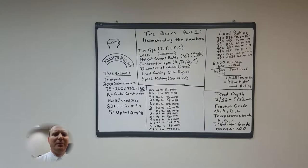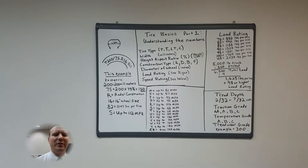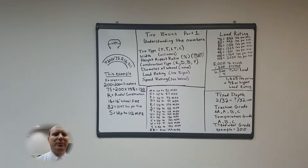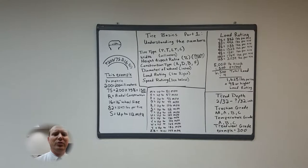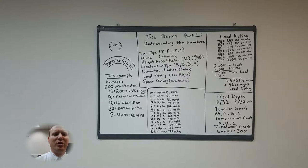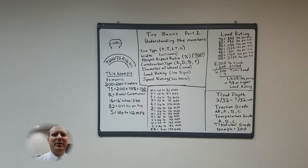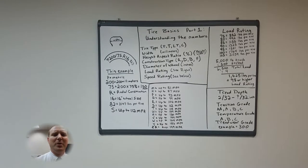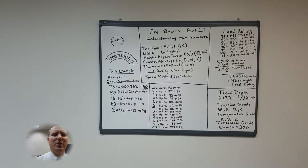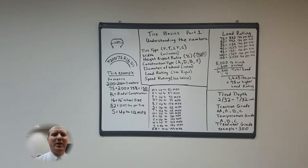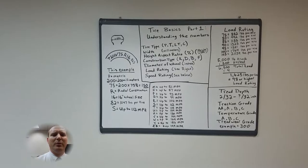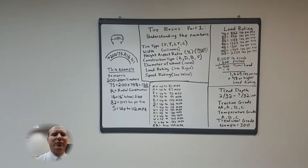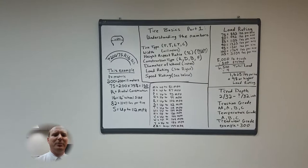So in this example our P metric tire is 200 millimeters wide from sidewall to sidewall with a 75% height aspect ratio which means it's 150 millimeters tall in this section. It is a radial construction to be mounted on a 16 inch wheel with a load rating of 82 which is 1047 pounds per tire with a speed rating of S which allows for up to 112 miles per hour maximum speed.